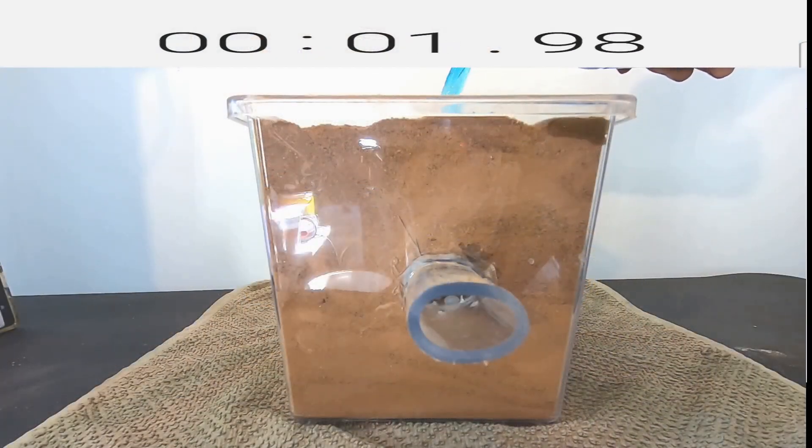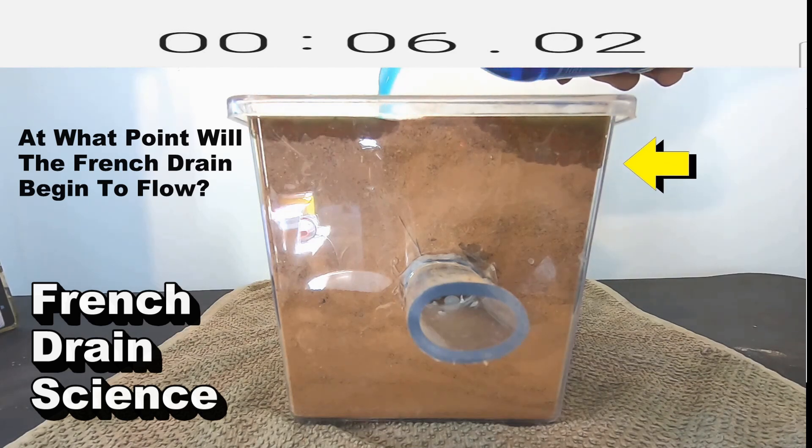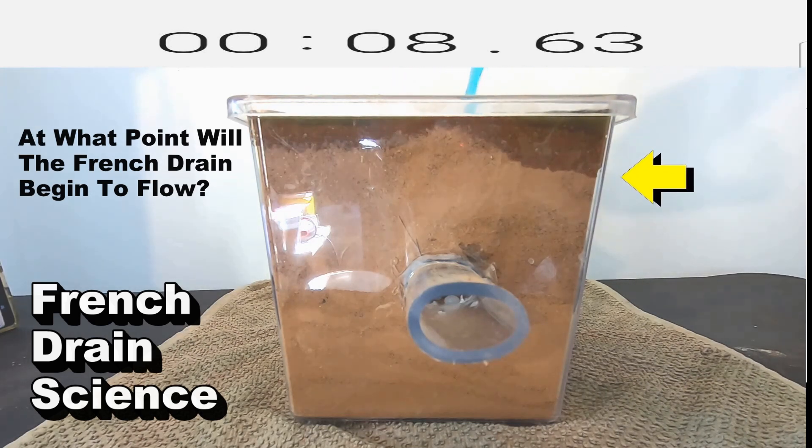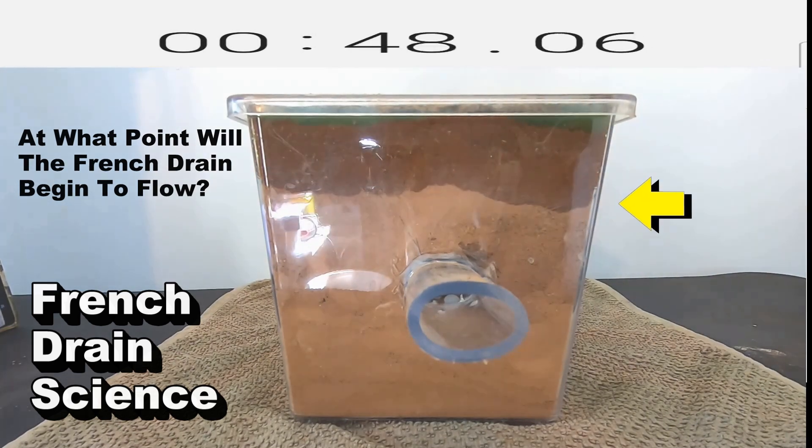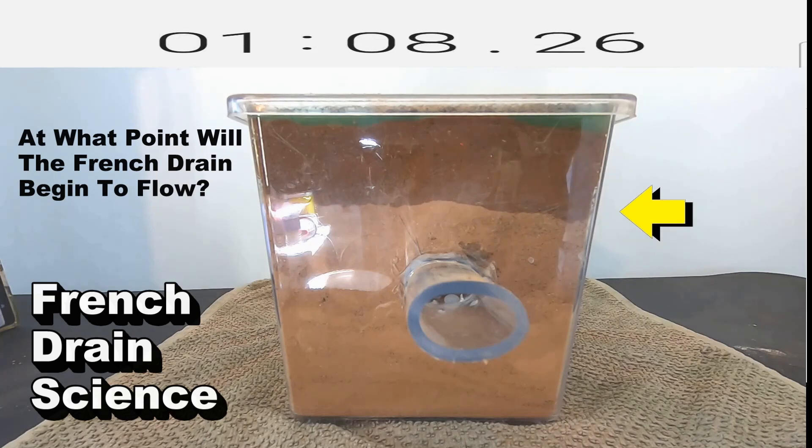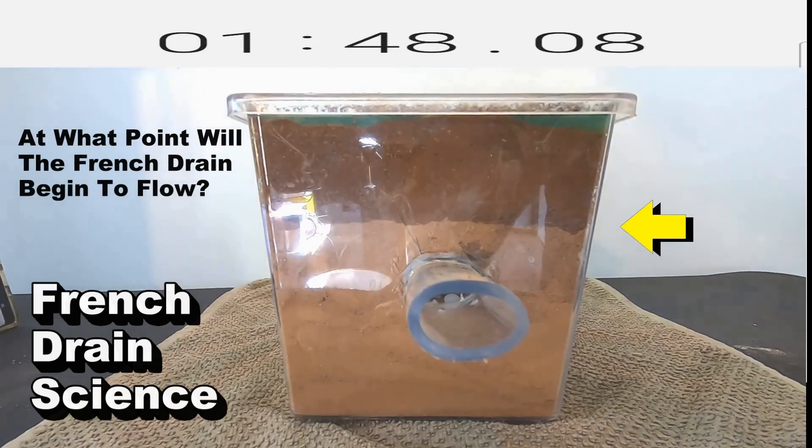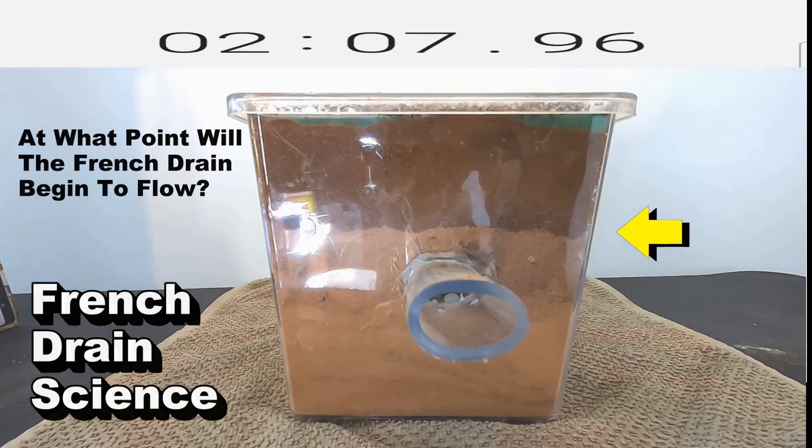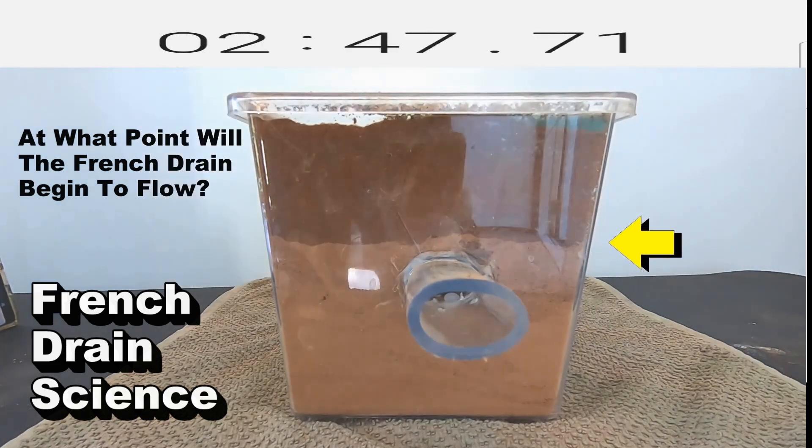Okay, here's our first event rainfall, you know, a couple inches within the hour. Just kind of watch that water level as it goes down through the soil. At what point will the French drain begin to flow?